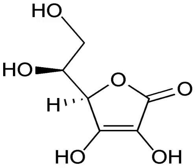In redox processes, the reductant transfers electrons to the oxidant. Thus, in the reaction, the reductant or reducing agent loses electrons and is oxidized, and the oxidant or oxidizing agent gains electrons and is reduced. The pair of an oxidizing and reducing agent that are involved in a particular reaction is called a redox pair. A redox couple is a reducing species and its corresponding oxidizing form, e.g., Fe2+/Fe3+.